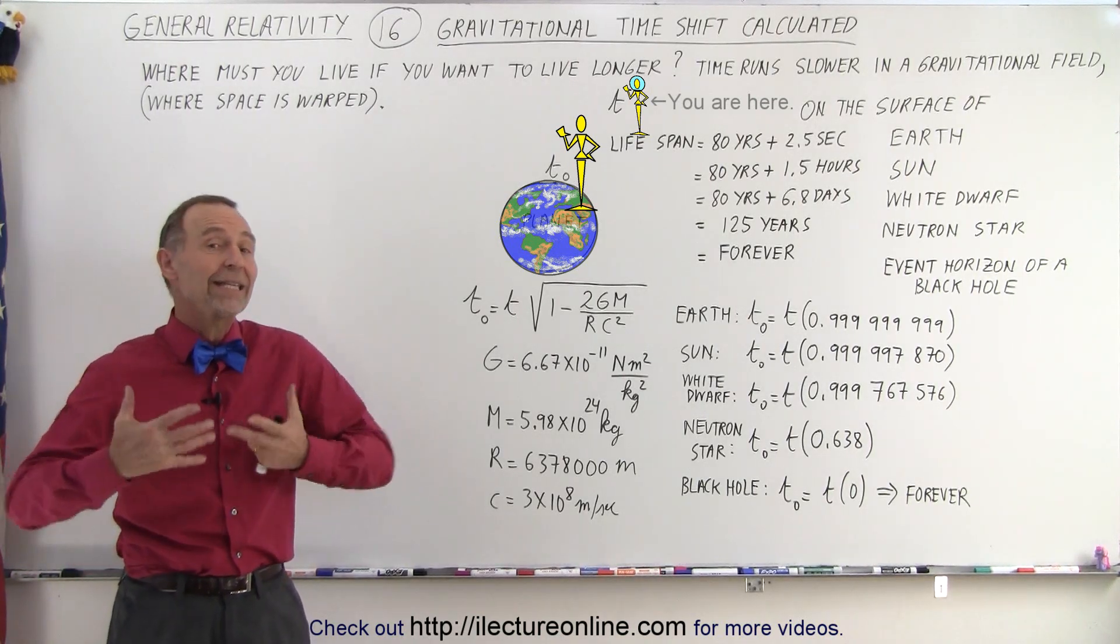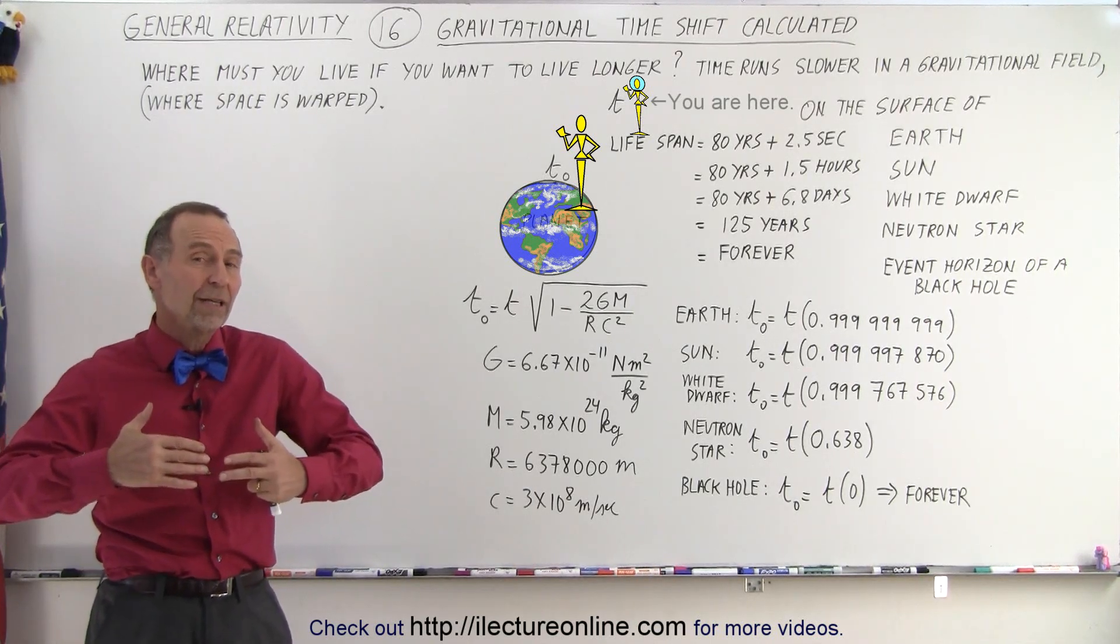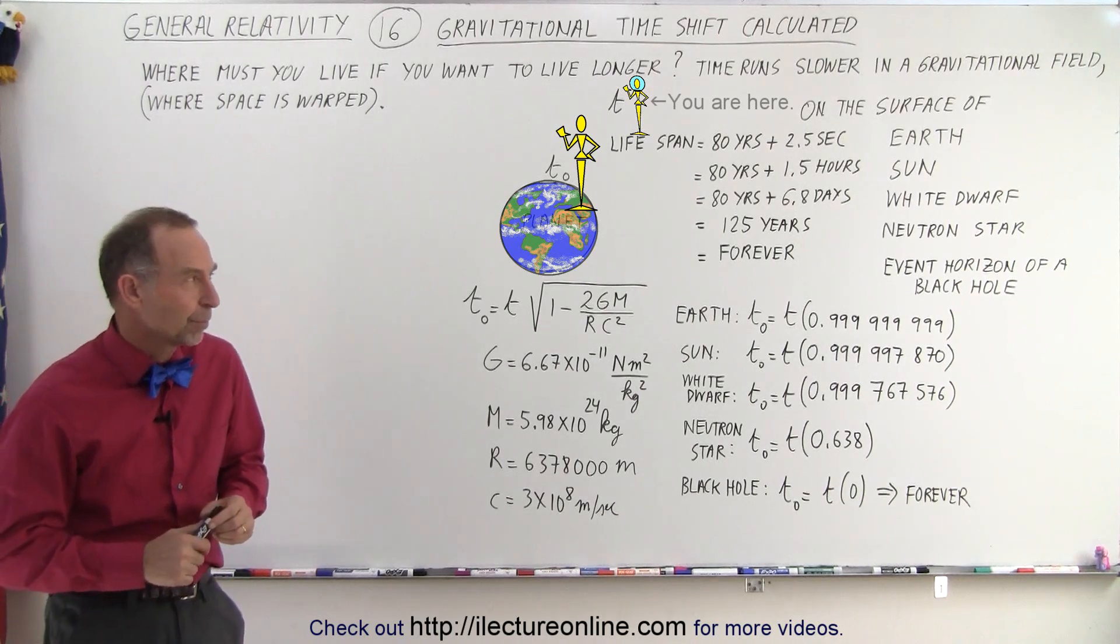Let's say that a typical lifespan is 80 years. How much longer would you live if you would normally just live 80 years if you lived in a different location? So first, the equation.